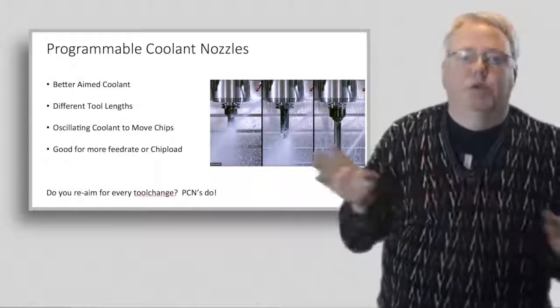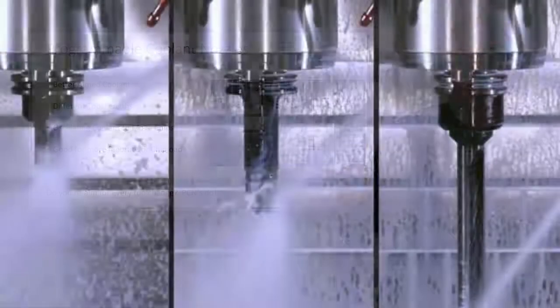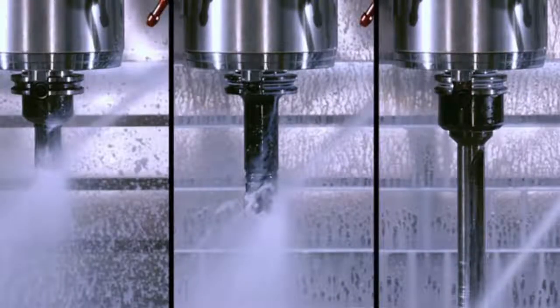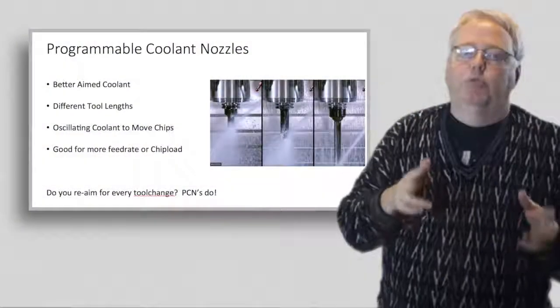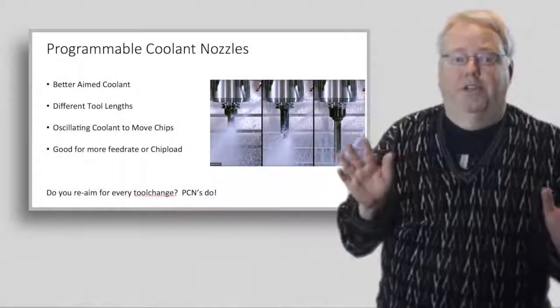Check out the photo. Different length tooling means aiming the coolant in a new spot every tool change. If you do this, you can get higher feed rates and more productivity. But how many of you will manually re-aim the coolant nozzles after each tool change? I know I don't. With a programmable coolant nozzle though, you can automate the process and capture that lost productivity.